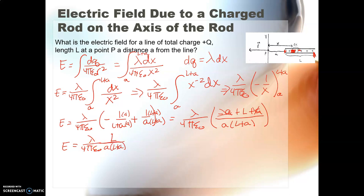Now, you'll notice in the description of this problem, it says that it wants the electric field for a total line of charge of plus Q for a length L at point P, a distance a from the line. So that means we can't leave it in terms of lambda. So we need to replace lambda. But lambda, right, the linear charge density is the total charge Q over the total length L.